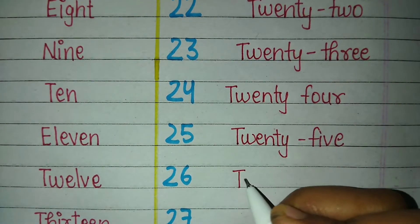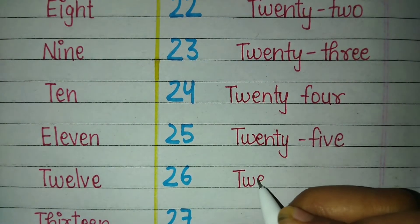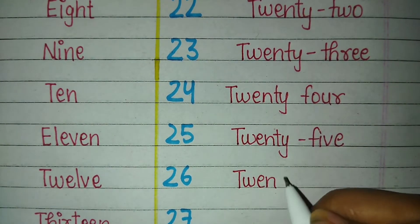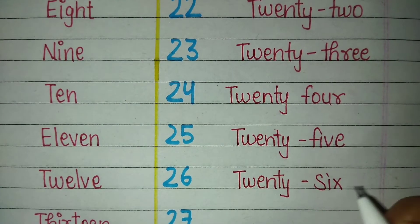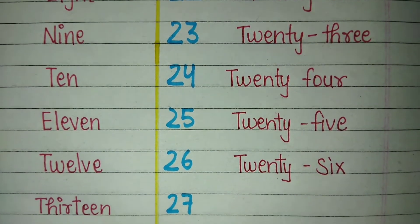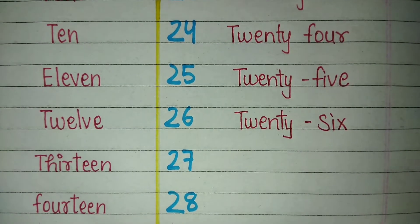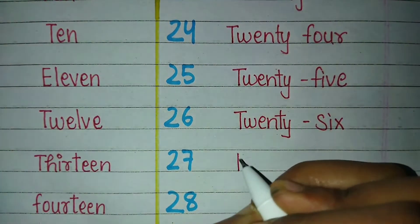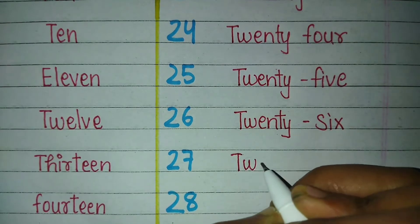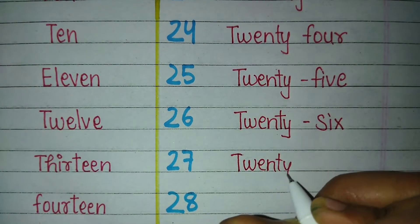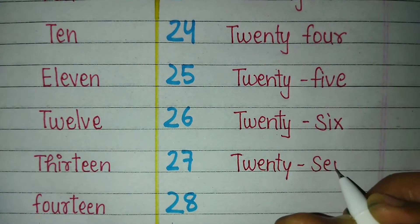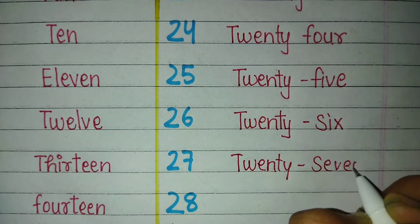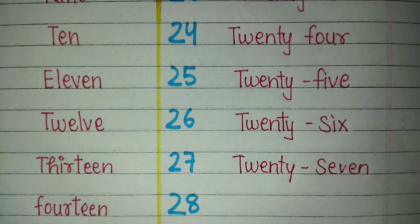Twenty-seven — T-W-E-N-T-Y — 20, S-E-V-E-N — 7 — 27. Twenty-eight — T-W-E-N-T-Y — 20, E-I-G-H-T — 8 — 28.